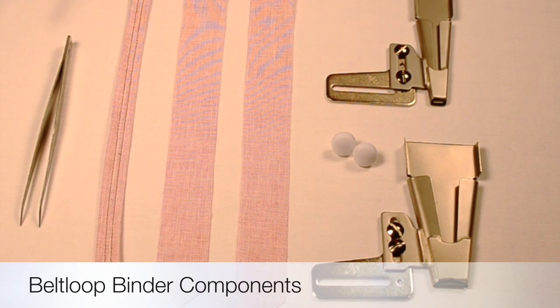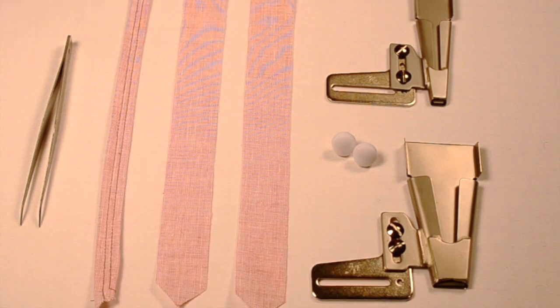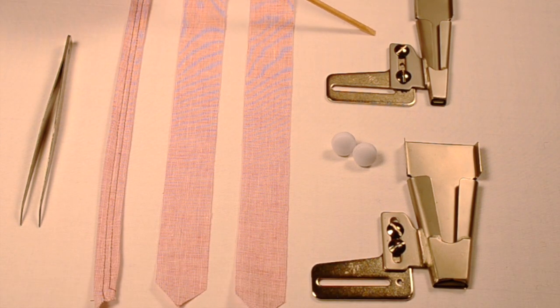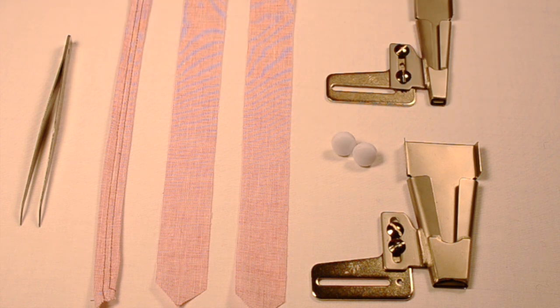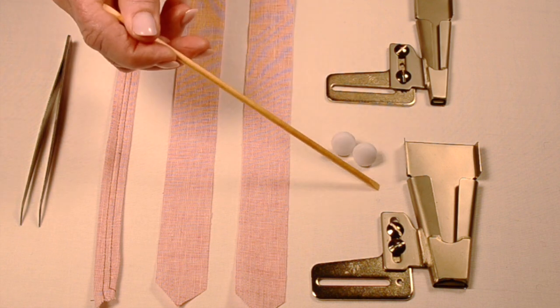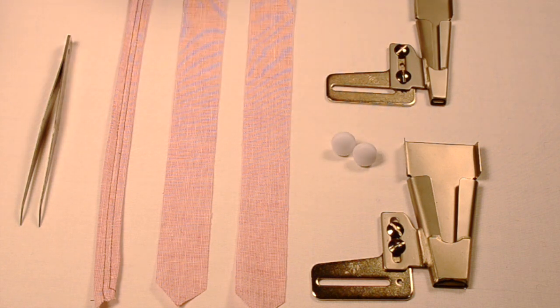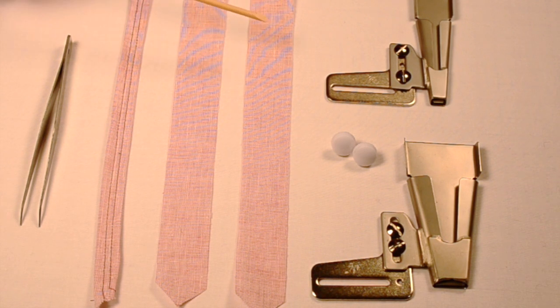I have the components that we'll be using today set up, and for my machine, the Baby Lock Ovation, I have two different width belt loop binders: a three-quarter inch which is the one that I'll be demonstrating today, and there is a one and a half inch.